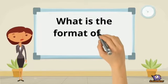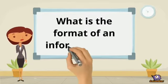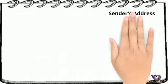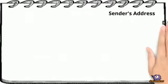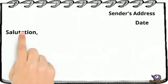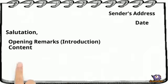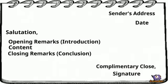What is the format of an informal letter? Look carefully. First, we write the sender's address, then the date, then salutation, opening remark, content, then closing remark, and then the complimentary close and your name and signature.